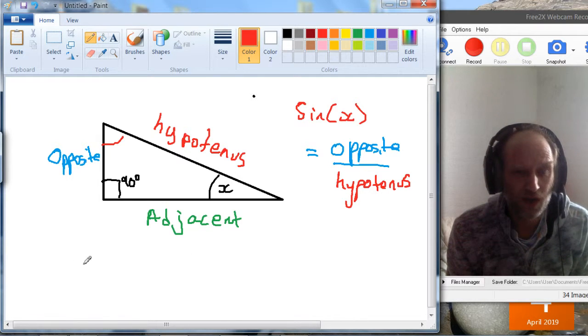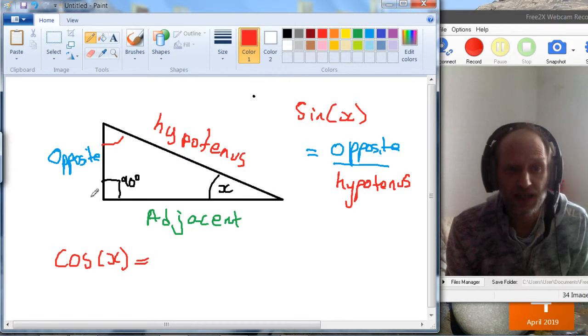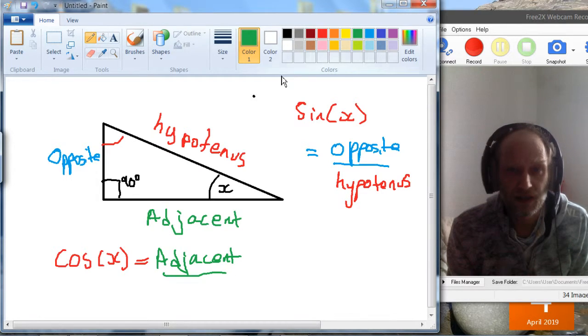And there's two other functions. Cos x. Now what does cos x give you? Cos x gives you the value of the adjacent over the hypotenuse.